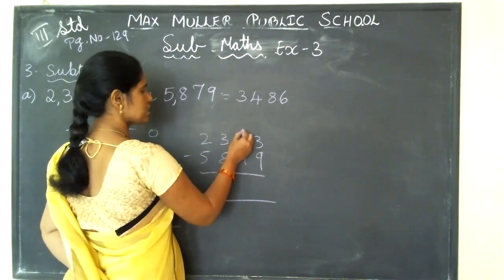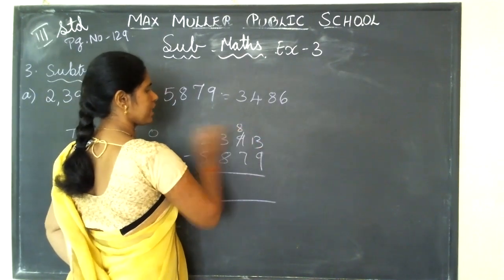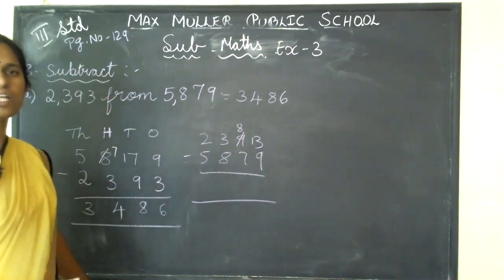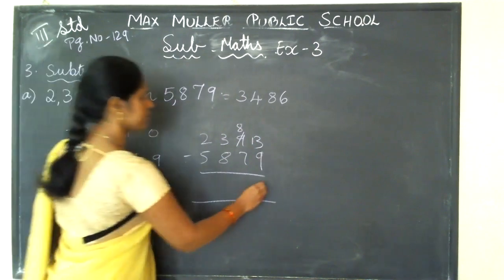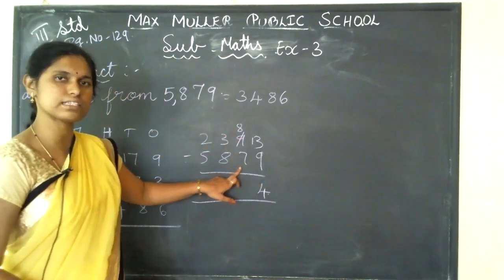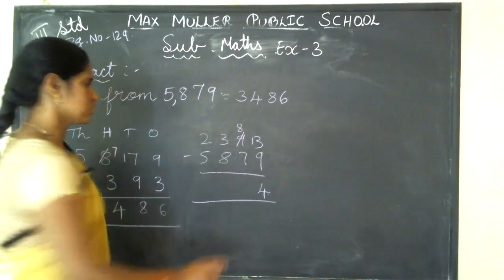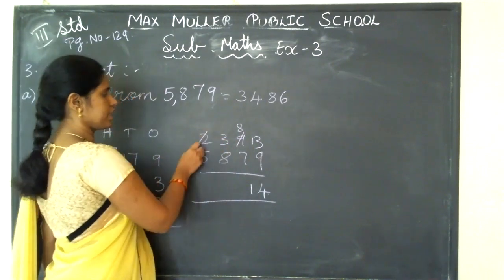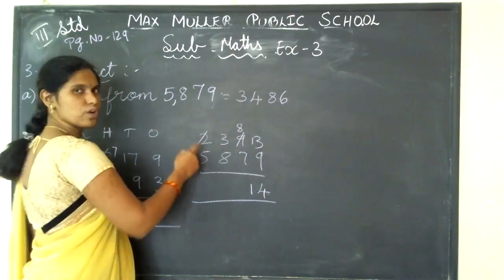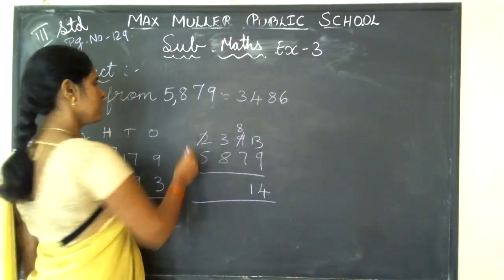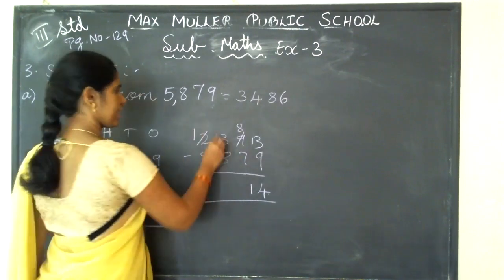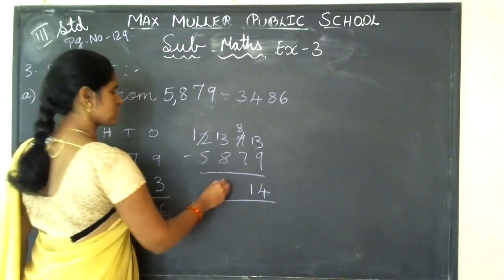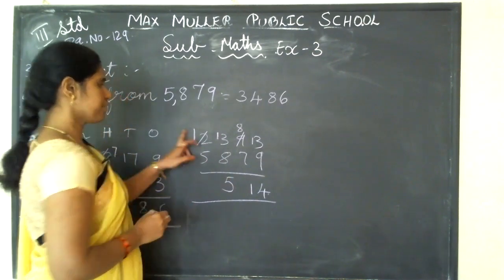What I will do? I will go to the tens place and borrow 1. How much will it become? 8. Now 13 minus 9 — from 13 if I minus 9, how much will you get? 4. From 8 if I minus 7, how much will you get? 1 — so write down 1. From 3, can I minus 8? No. I will borrow in the thousands place. So 2 — from 2 if I minus 1, I get 1, I will carry to the hundreds place. 13 minus 8 — from 13 if I minus 8, is how much? 5.